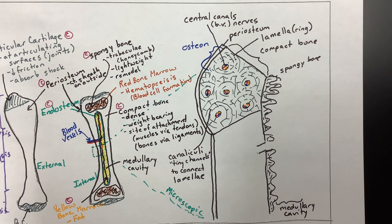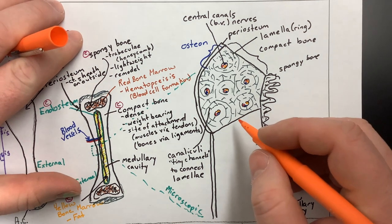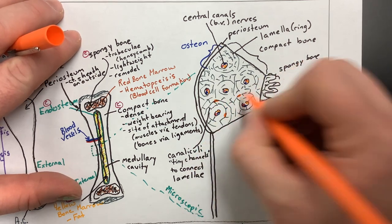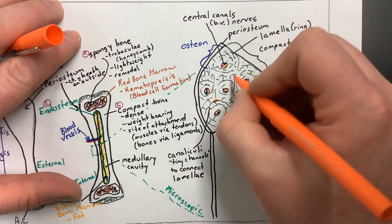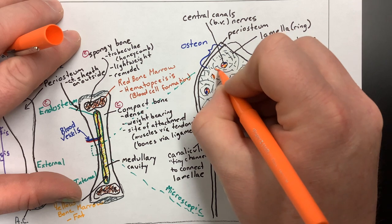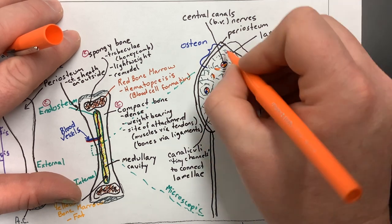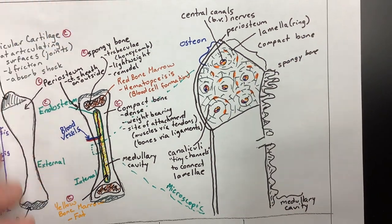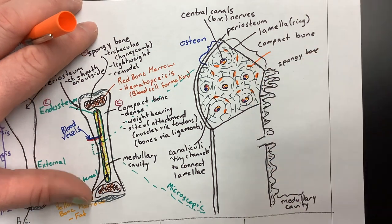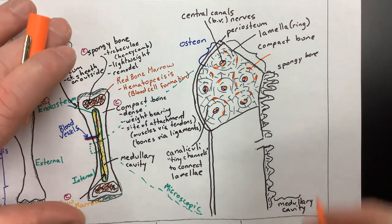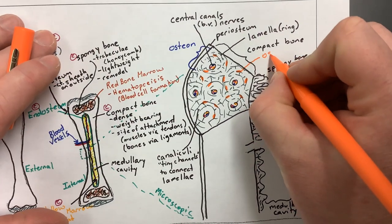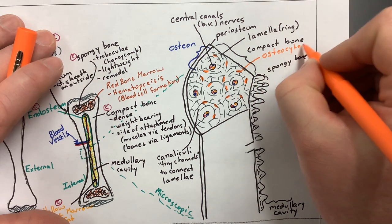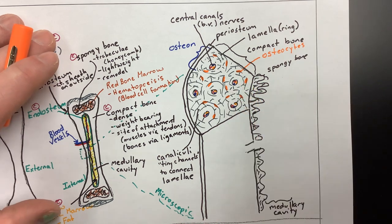There are other cells to keep track of as well. Bone cells live in the spaces of the lamellae and are drawn in orange. The word root 'os' means bone, and these bone cells are called osteocytes.